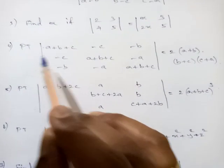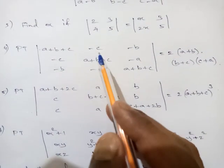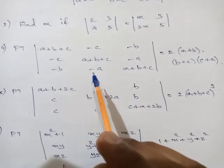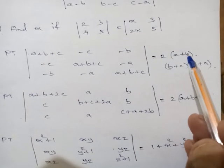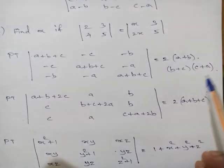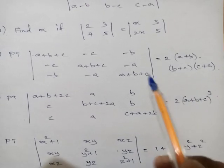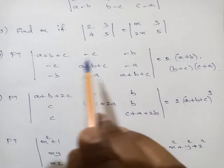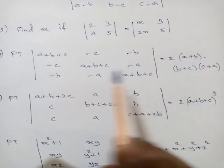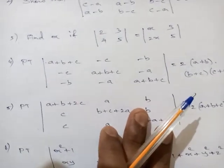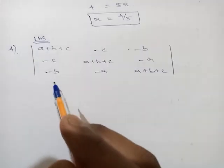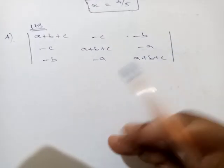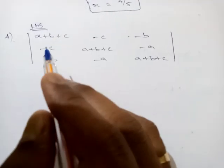See the fourth question. Show that the determinant with rows (a+b+c, −c, −b), (−c, a+b+c, −a), (−b, −a, a+b+c) equals 2(a+b)(b+c)(c+a). We have to prove this. We need a+b format, so take the left hand side.